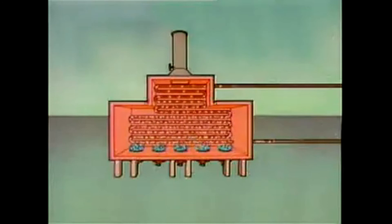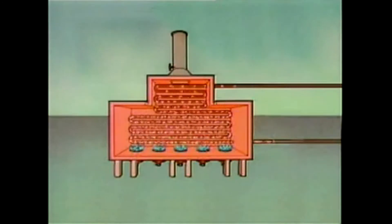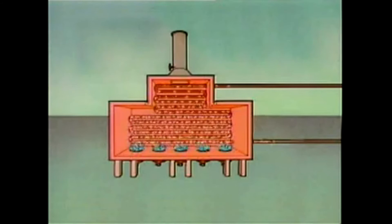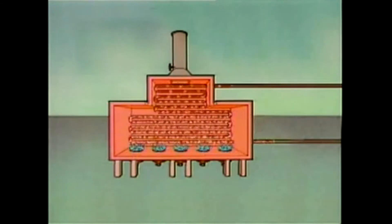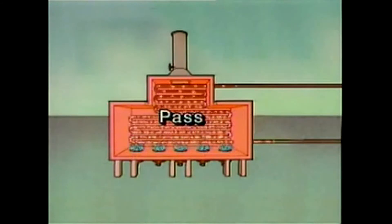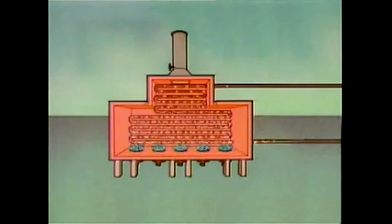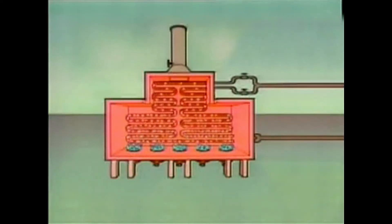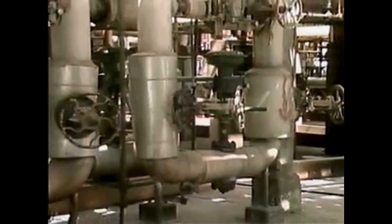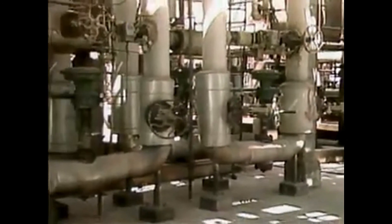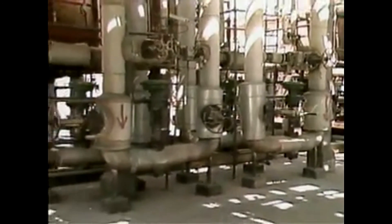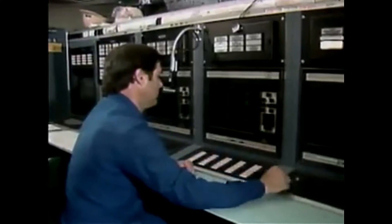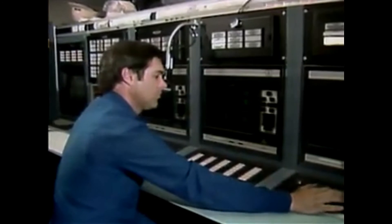The route that the process fluid takes as it flows through a furnace depends on the design of the furnace. Each continuous uninterrupted path that the fluid takes is called a pass. This furnace is a single pass furnace, but many furnaces are multi-pass types. The flow rate of process fluid through a furnace is regulated by valves — usually a control valve for each pass — and these valves are often operated automatically as part of a control system.